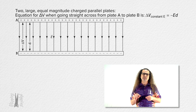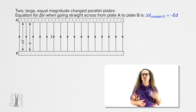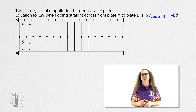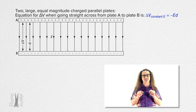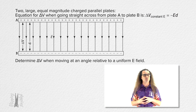Good morning. Previously, we determined the electric potential difference when moving parallel to the direction of a uniform electric field to be equal to the negative of the electric field E times the distance parallel to the electric field d. Today, let's look at determining the electric potential difference when moving at an angle relative to a uniform electric field.